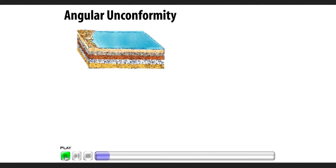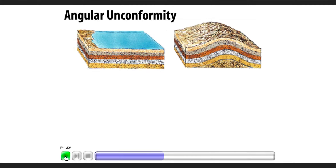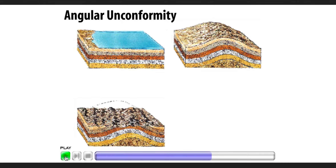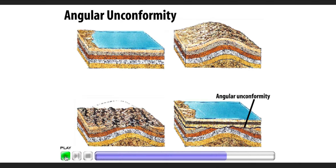First, sedimentary rocks are deposited originally as horizontal layers. Then the horizontal rock layers are tilted as forces within Earth deform them. Next, the tilted layers erode. An angular unconformity results when new layers form on the tilted layers as deposition resumes.